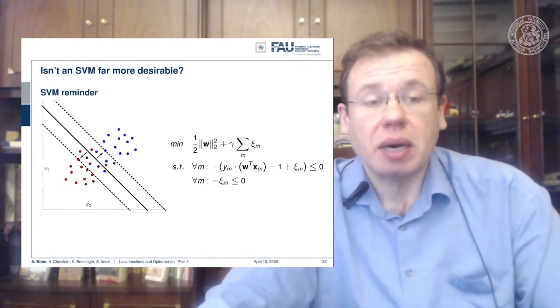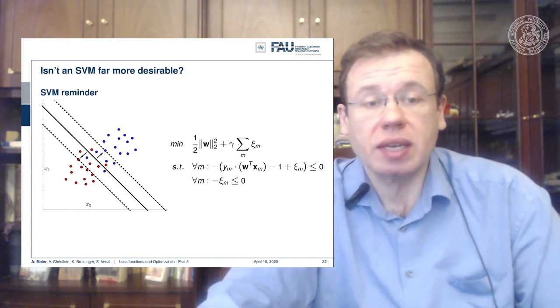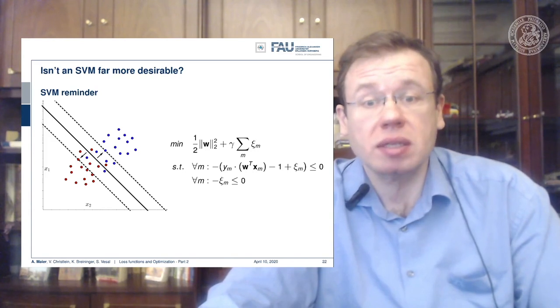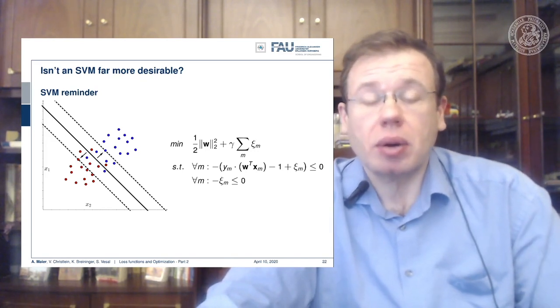Now we can expand this also to cases where the two classes are not linearly separable. This is then the soft margin SVM, and the trick here that we introduce is that we allow a misclassification just by introducing slack variables ξ, and ξ now are added towards the distance to the decision boundary. And this means that I can take individual points and move them back to the decision boundary.